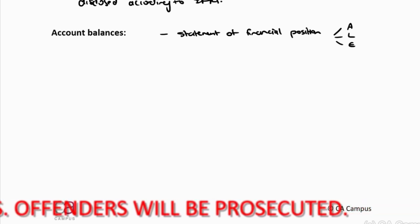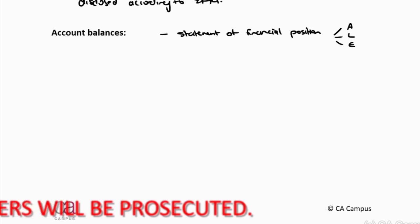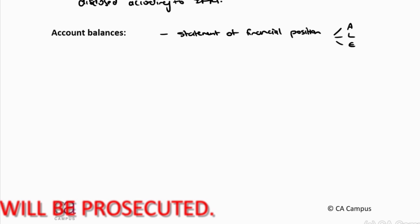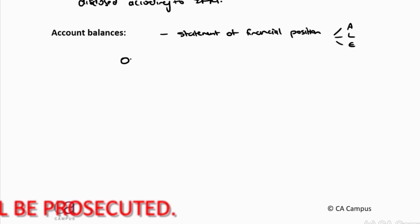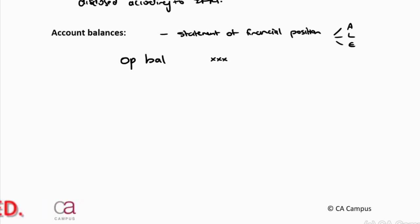If we look at what sits in an account balance, you would have potentially an opening balance brought forward from the prior year, then you would have transactions initiated during the current year that affect this balance — and then your additions and disposals.